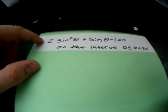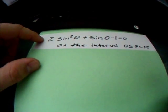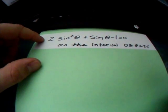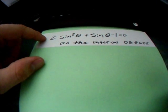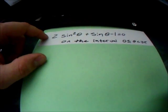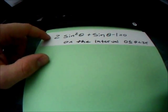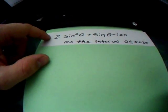Our problem today is 2 sine squared theta plus sine theta minus 1 is equal to 0, and the interval 0 is less than or equal to theta, which is less than 2 pi.